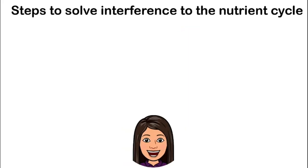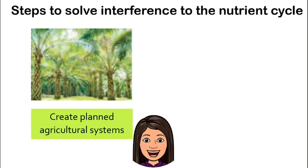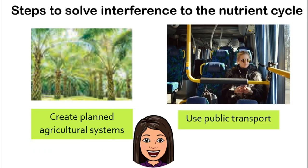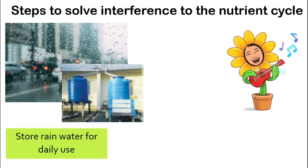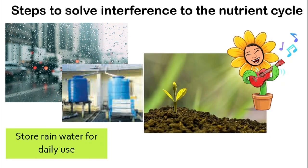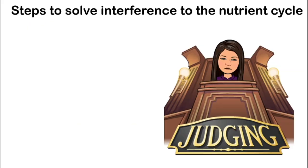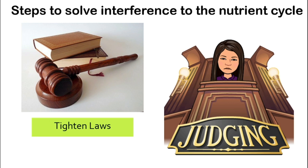So how do we solve these problems? We can create planned agricultural systems, use public transport to reduce car use and the burning of fossil fuels, collect rainwater for daily use, replant trees after chopping them down, and finally tighten laws so that everyone can be more responsible in their use of natural resources.